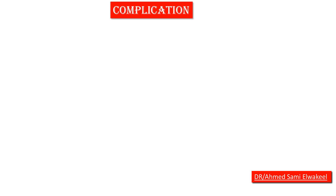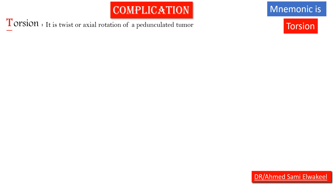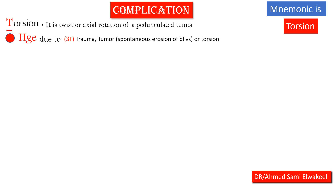The complications of ovarian cysts use the mnemonic TORSION. T for torsion — twisted or axial rotation of a pedunculated tumor. O, which looks like an ovarian cyst, represents hemorrhage (bleeding) due to the 3 Ts: trauma, tumor, or torsion.